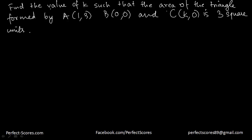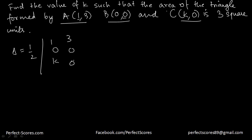Now for the second question: find the value of k such that the area of the triangle formed by these three points equals 3 square units. We set up the area as half the determinant of the matrix with rows (1, 0, k), (3, 0, 0), (1, 1, 1), and this should equal either positive 3 or negative 3, because we consider both values of the determinant when the area is given.